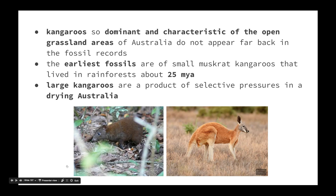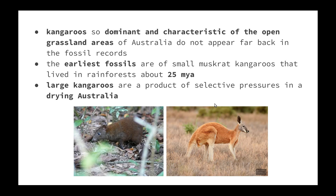Variations within the population meant that some individuals developed longer limbs, stronger tails, and lighter fur that blended in with the environment, allowing them to escape predators. These individuals were able to survive to reproductive age and pass those characteristics on to their offspring, resulting in the modern kangaroo we see today.